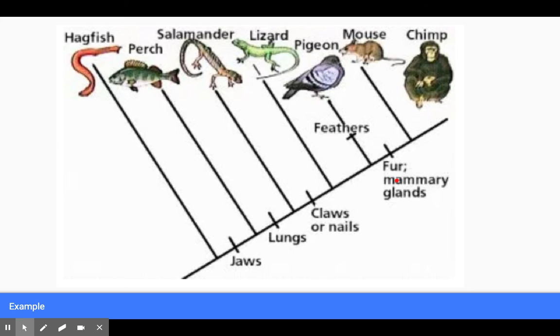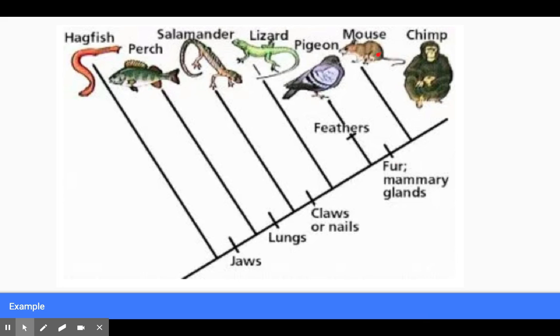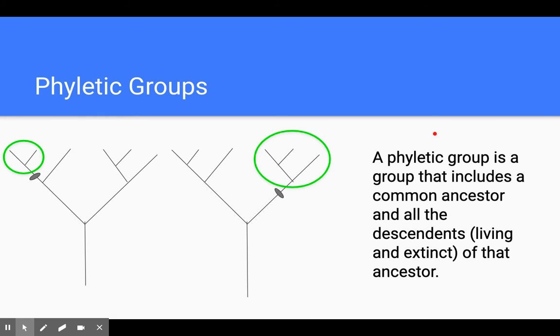Now, if I were to ask you which two organisms are the most closely related, I would hope that you would say mouse and chimp, because they have all of these traits in common. So these two are the most closely related because they have all of this in common.